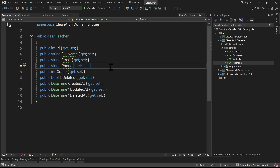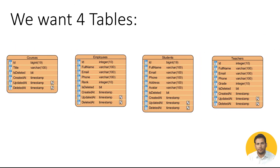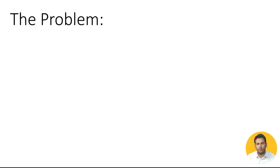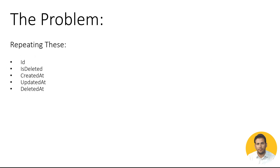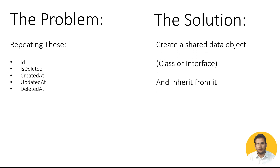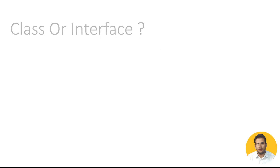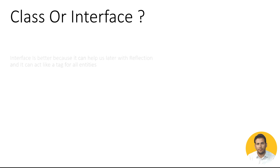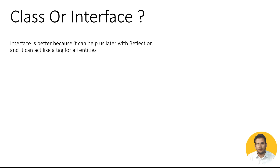The problem is we are repeating these properties: id, is_deleted, created_at, updated_at, and deleted_at. The solution is to create a shared data object - either a class or an interface - and inherit from it so that all entities have all of them. An interface is better because it can help us later with reflections and it can act like a tag for all entities.